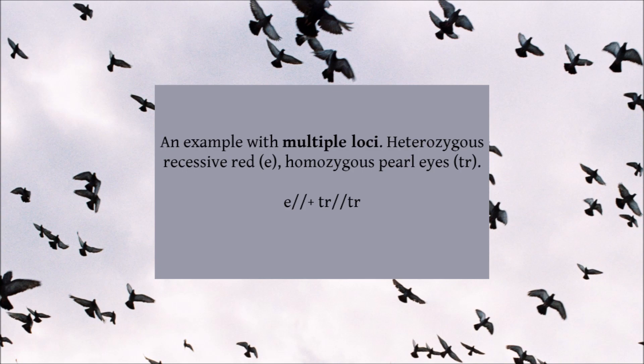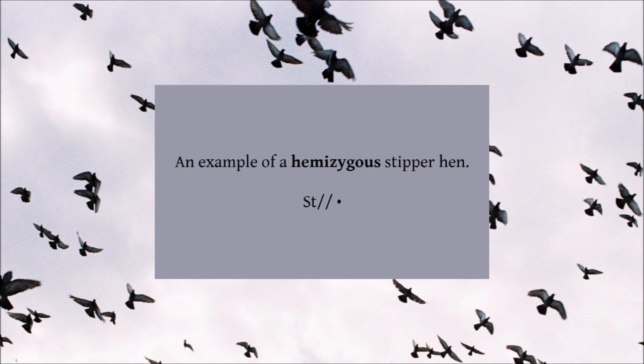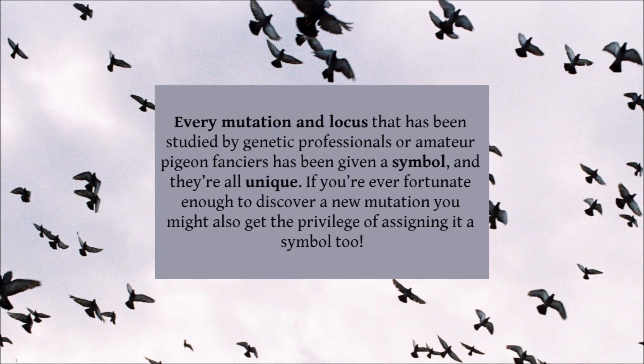We can build on this with other loci as well. Let's include the pigeon's eye colour — pearl eyes are represented by the symbol TR. So a pigeon that was heterozygous for recessive red and homozygous for pearl eyes would be written as E // + TR // TR. You can keep building on this to express as many loci as you need. The only difference is when writing a sex-linked gene on a hen: hens only have one Z chromosome, so the missing chromosome is replaced by a bullet point. A hemizygous stipper hen would be written as ST // •. Every mutation and locus has been given a unique symbol by genetic professionals or amateur pigeon fanciers.